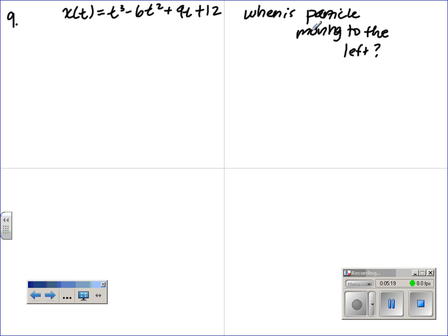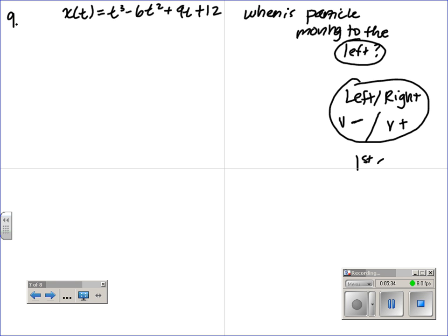Okay, number nine, when is the particle moving to the left? Okay, anytime you're talking about left or right, look at the velocity. The velocity negative means left. Velocity positive means right. So this is the whole first derivative test. Find the velocity set it equal to zero to get your critical numbers. Okay, so left keyword, looking for where velocity is negative.